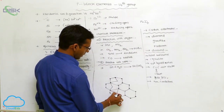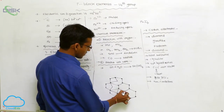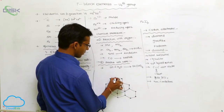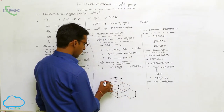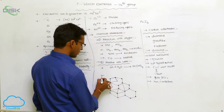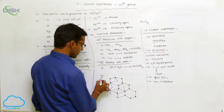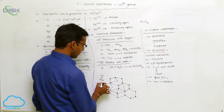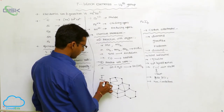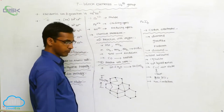This is the geometrical structure of diamond. The C-C bond distance is 154 pm.